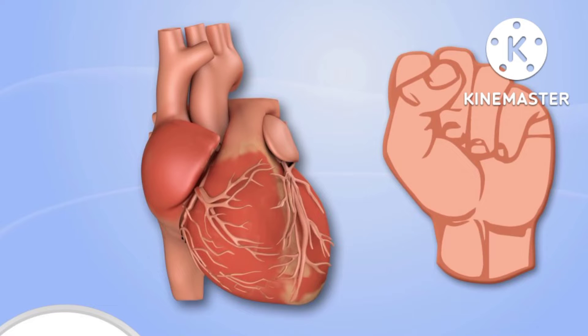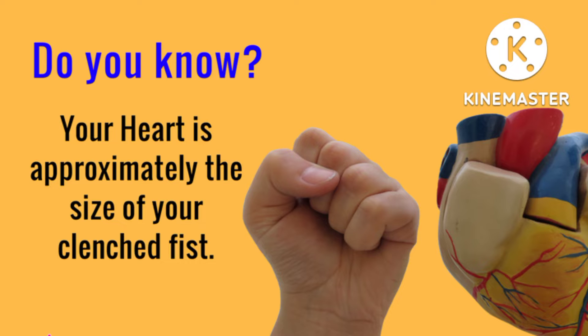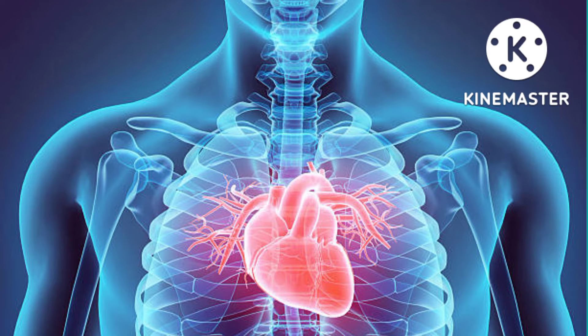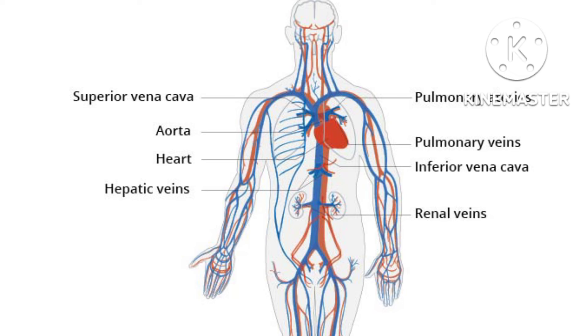The heart is a muscular organ about the size of a fist, located just behind and slightly left of the breastbone. The heart pumps blood through the network of arteries and veins called the cardiovascular system.